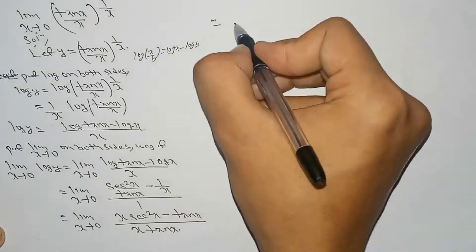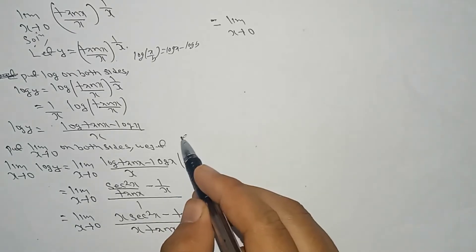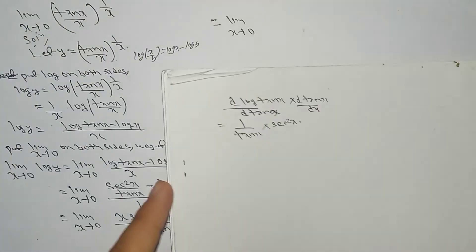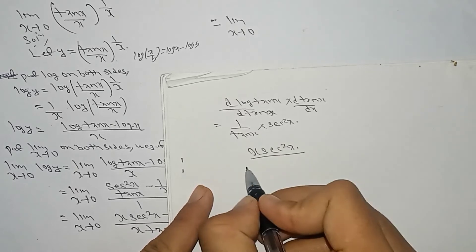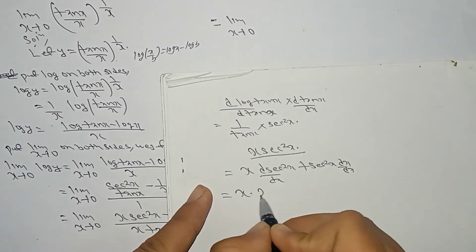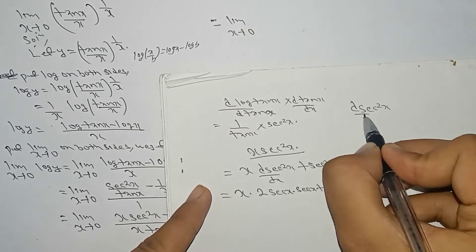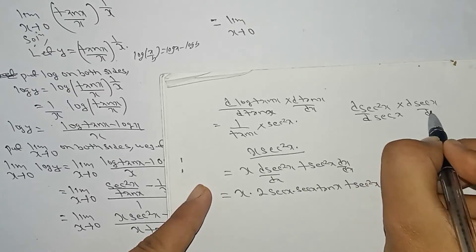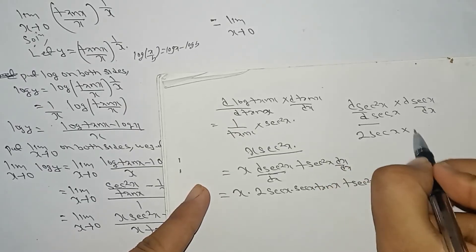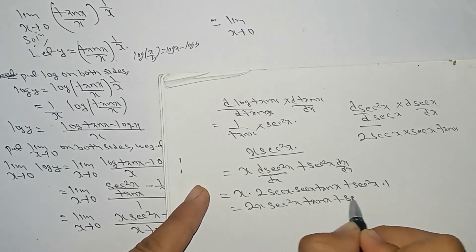Again we perform the derivative for this. Limit x tends to 0 — it is of the 0/0 form, so we apply L'Hôpital's rule. The derivative of x·sec²x uses the product rule: x · d(sec²x)/dx + sec²x · dx/dx. That gives 2x·sec x · sec x·tan x + sec²x, which equals 2x·sec²x·tan x + sec²x. The derivative of tan x in the numerator is sec²x, and the derivative of x·tan x in the denominator is x·sec²x + tan x.